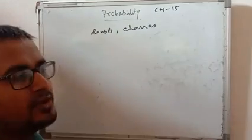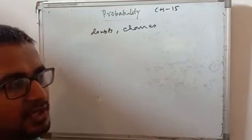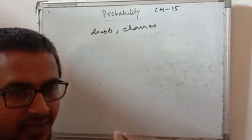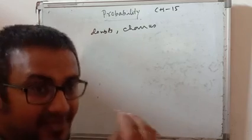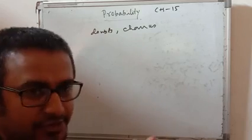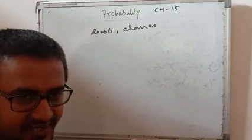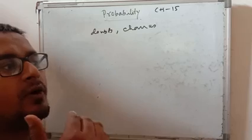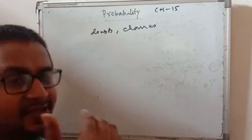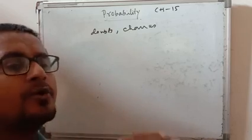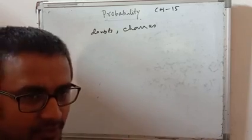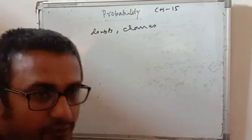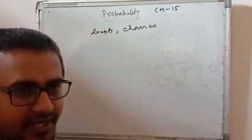For example, tomorrow Pratik will be absent or present — that also you can't say. So all these are things which may or may not be, which can happen or which cannot happen. This comes under the topic of probability.